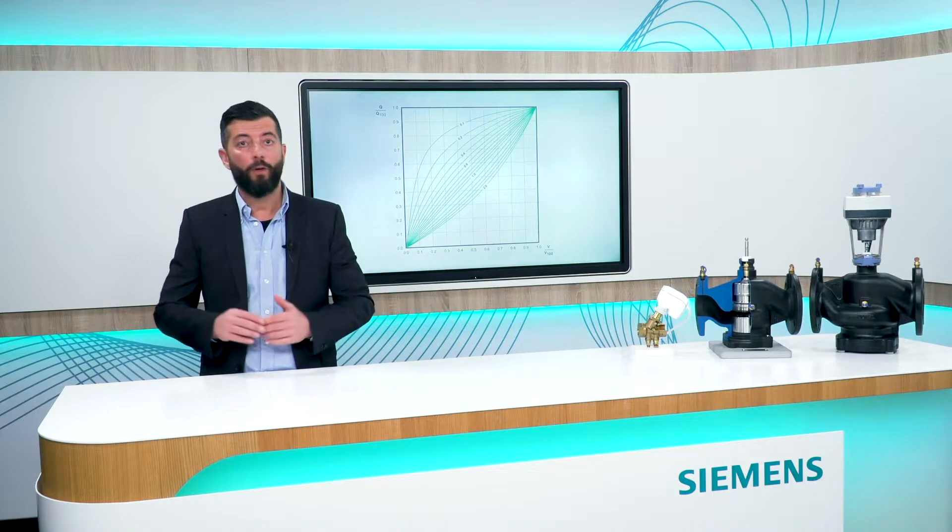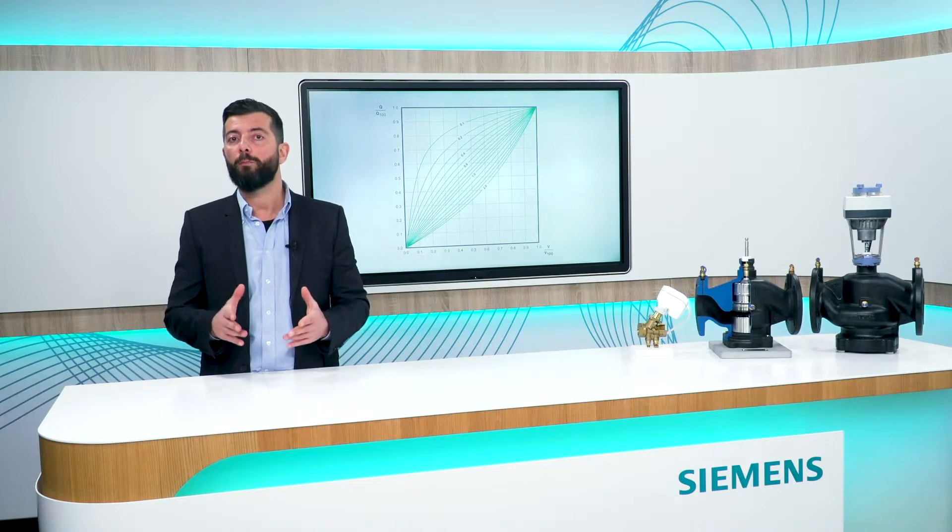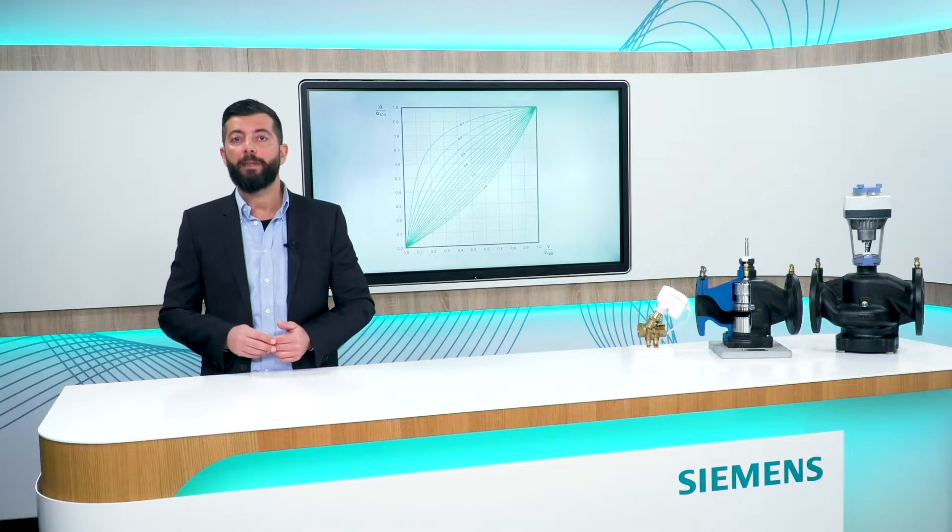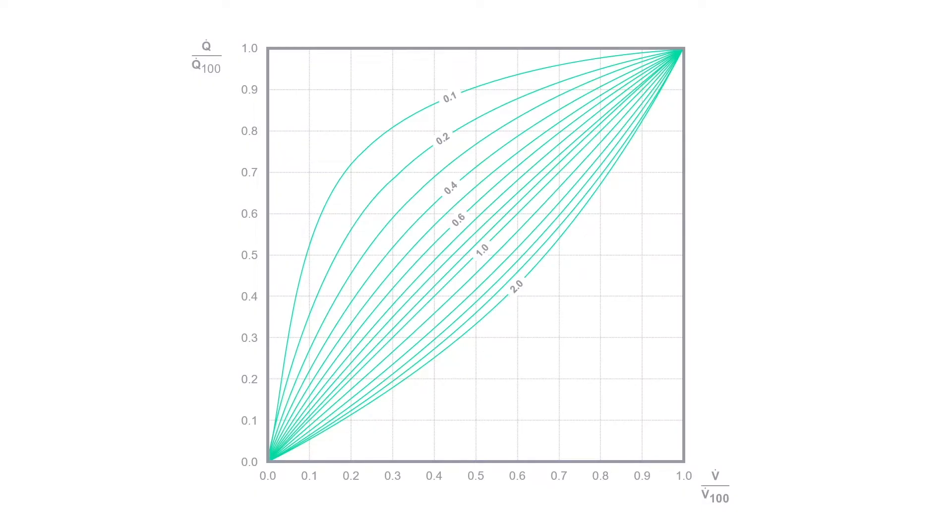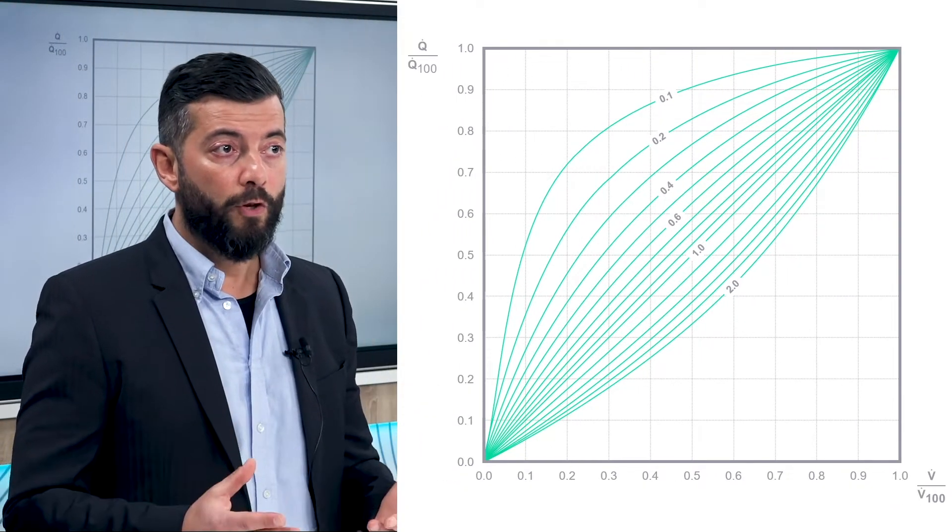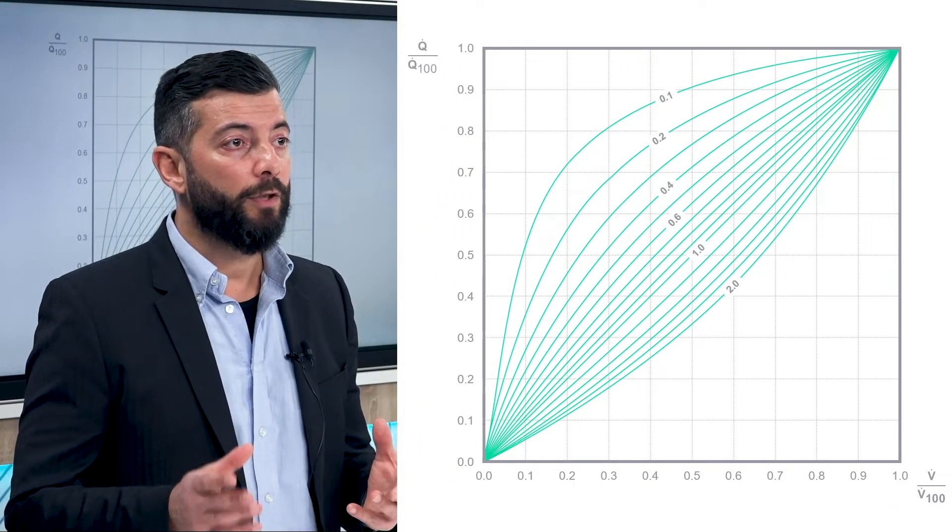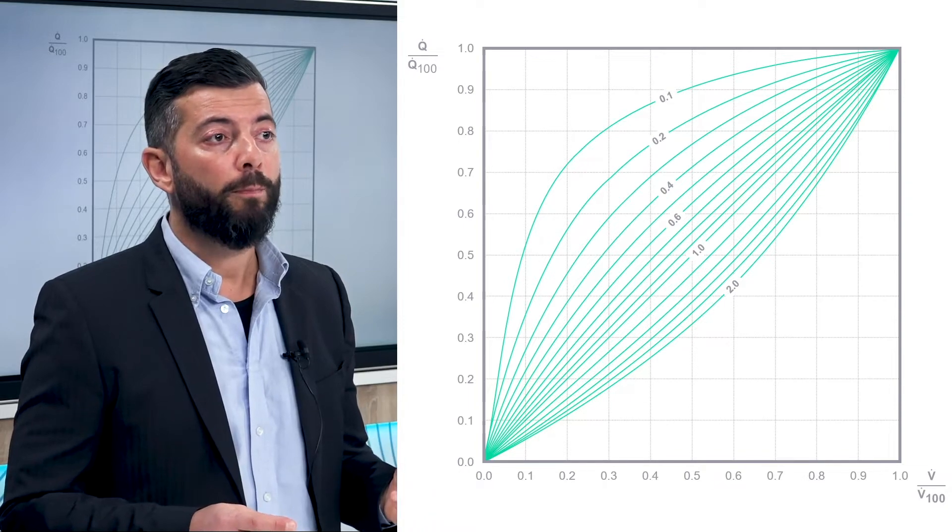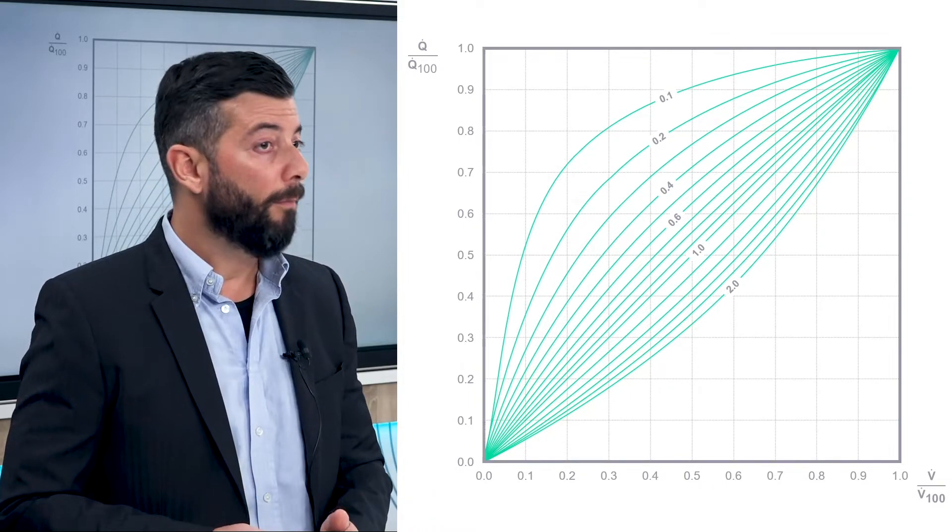we have to first look at the relationship between energy output and water flow in typical terminal devices. Here is a chart that illustrates how the energy is delivered in fan coils, radiant panels and heat exchangers. As you can see, the relationship between flow rate passing through the coil and the thermal output is non-linear, for most of them.